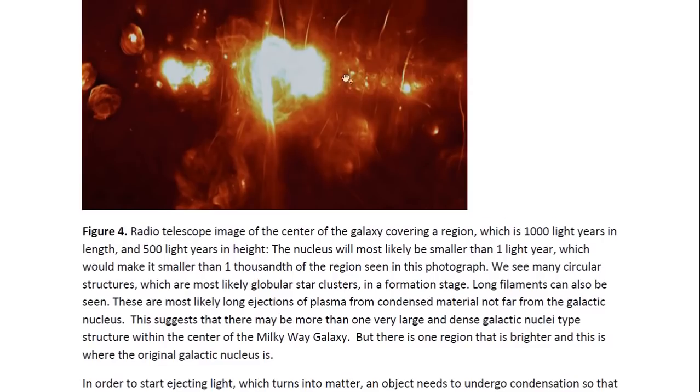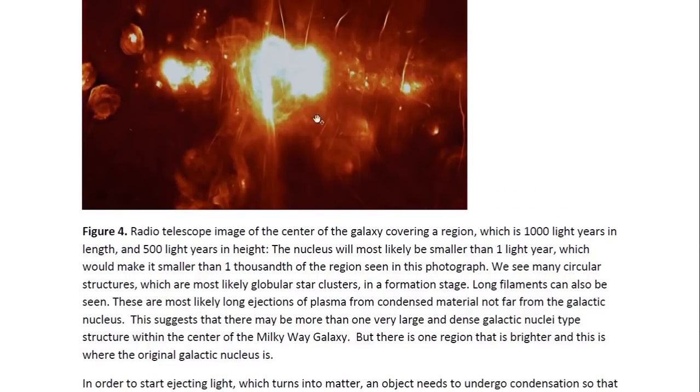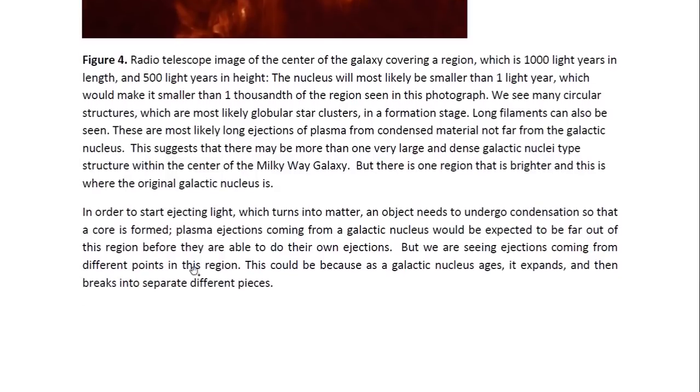There is still one region which is brighter than all the regions. This is most likely where the original or the largest galactic nuclei-type structure is, and one that is ejecting a large amount of material, as you can see from this very large and bright ejection here. It's ejecting material along here, and this is likely to be material that it has ejected as well. So the galactic nucleus must be somewhere there, inside there.